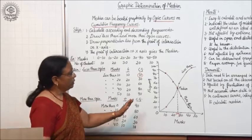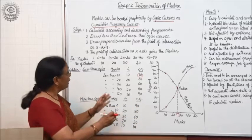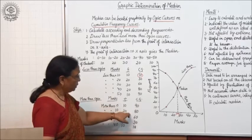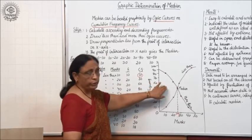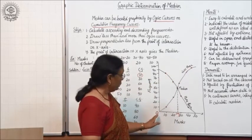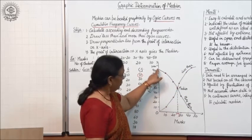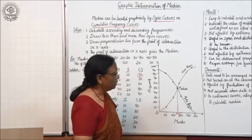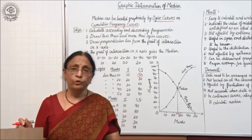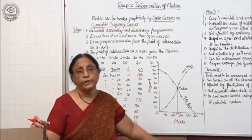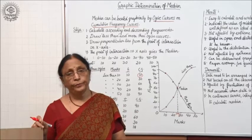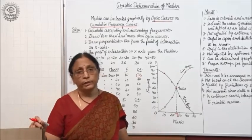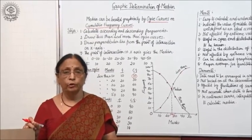So graphically, it is very easy to locate the median. Convert the data into cumulative frequencies for less-than and more-than ogives, plot the points, get two curves — the less-than ogive moving upward from left to right and the more-than ogive moving downward — find their intersection, draw a perpendicular, and locate the median. Earlier you did the mathematical calculation; this is the graphical determination of median.